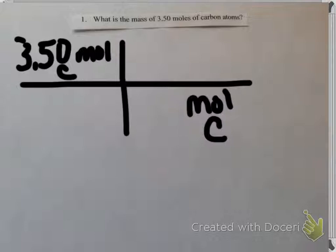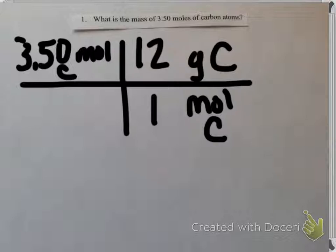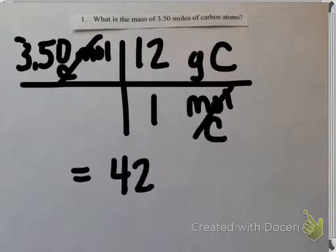I'm allowed to put grams of carbon in the top right because 1 mole of anything equals its molar mass from the periodic table. So I'm going to put 1 with mole and 12 with grams of carbon, because when I look on the periodic table, 12 is the molar mass of carbon. I'm going to cross out the units of moles of carbon, then multiply 3.50 times 12 and divide by 1, giving me 42 grams of carbon.